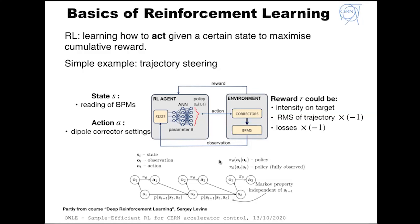For this to work, the RL agent expects the environment or problem to be a Markov decision process. If you are in state S1 and have transition probability P to go to state S2 by taking action A1, this transition should only depend on the current state and current action, not on any previous states. The learning is episodic: you iteratively solve the problem within one episode by going from one state to the next, and the agent tries to maximize the cumulative reward along this state trajectory.